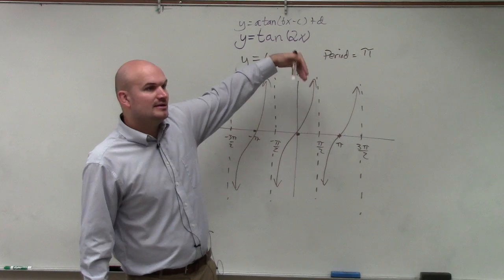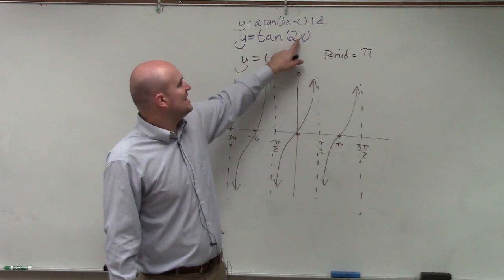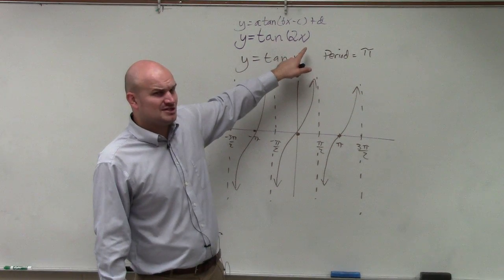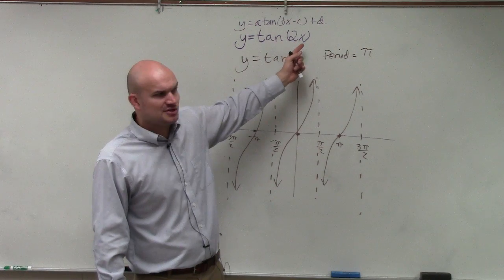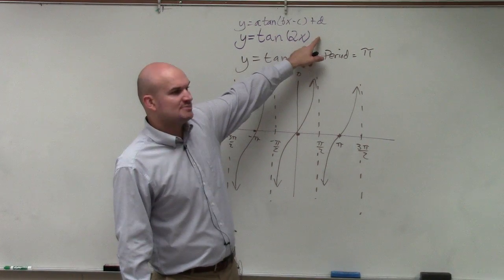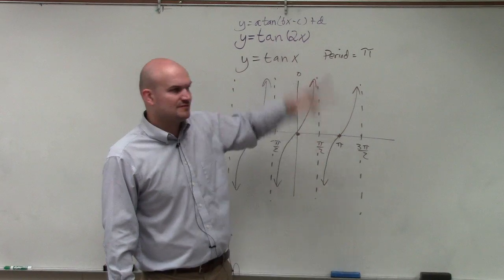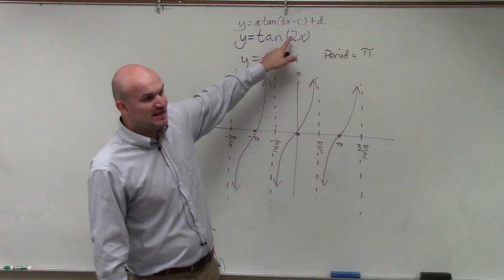bx minus c, that would be your phase shift. But if I set 2x equal to zero and solve for x, I still have x equals zero, so there's no phase shift. I'm not adding or subtracting anything outside the function, so I'm not shifting the graph up or down.